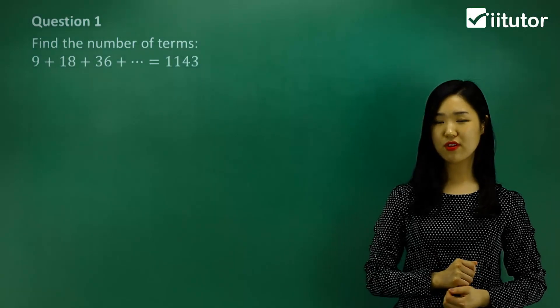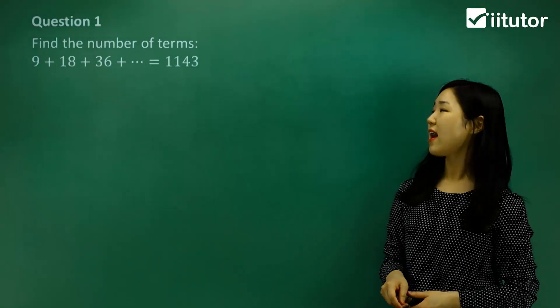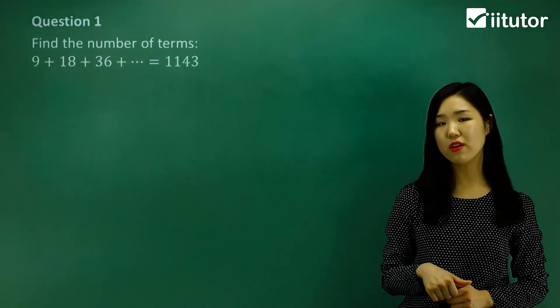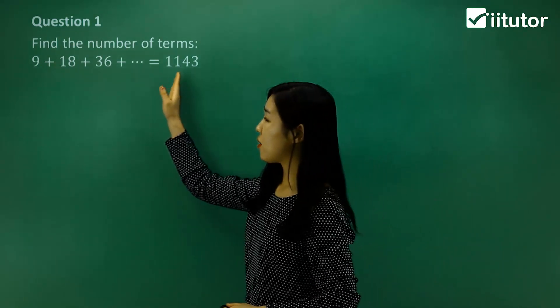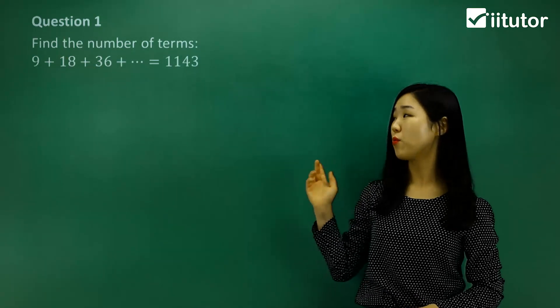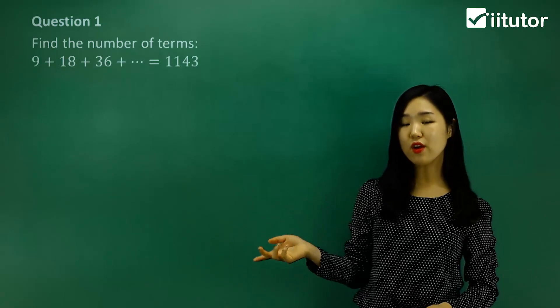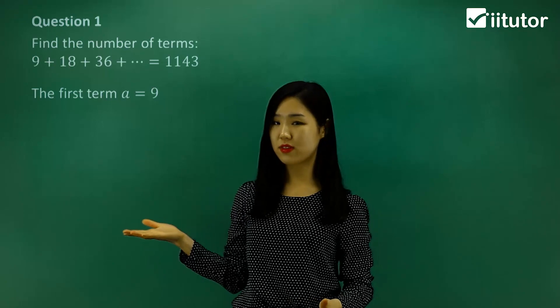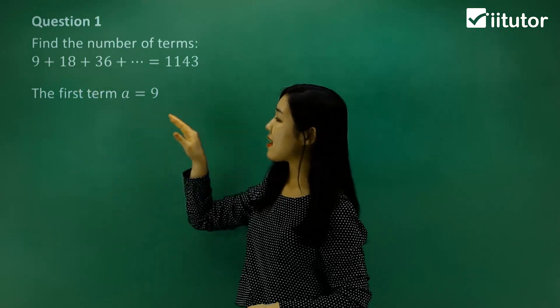All right guys, we're going to be finding the number of terms in a geometric series. In question one they're asking us to find the number of terms. So we want to know how many terms in this geometric series are required to make the sum 1143. We'll simply find firstly the first term, which is the first one in the list, which is simply nine. That's our first term.